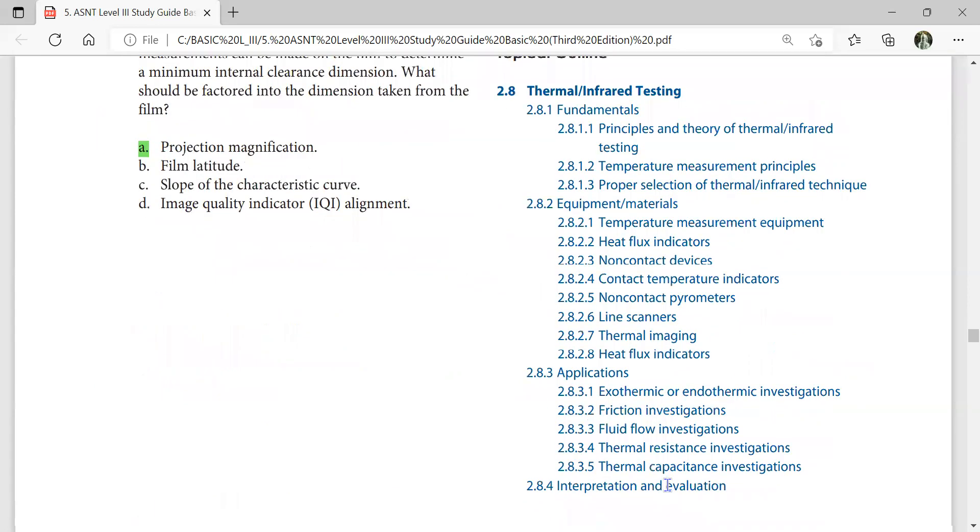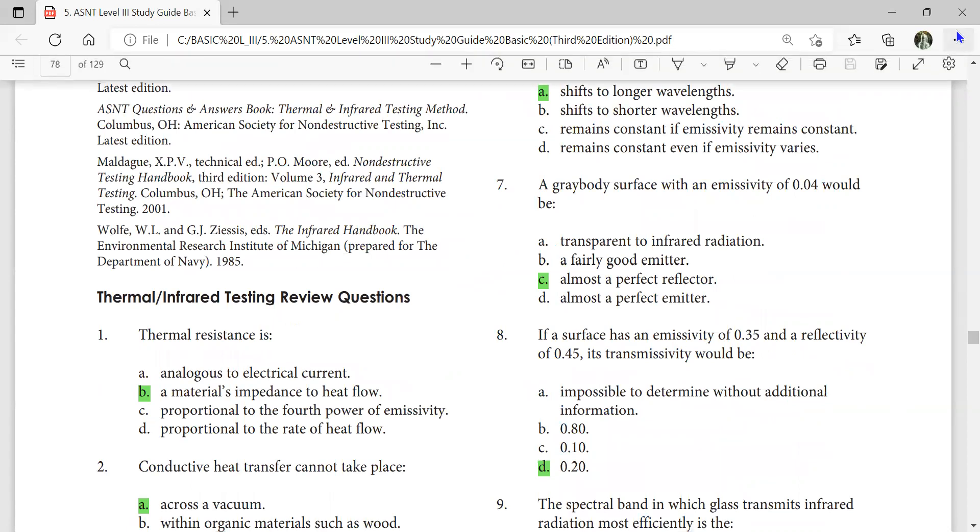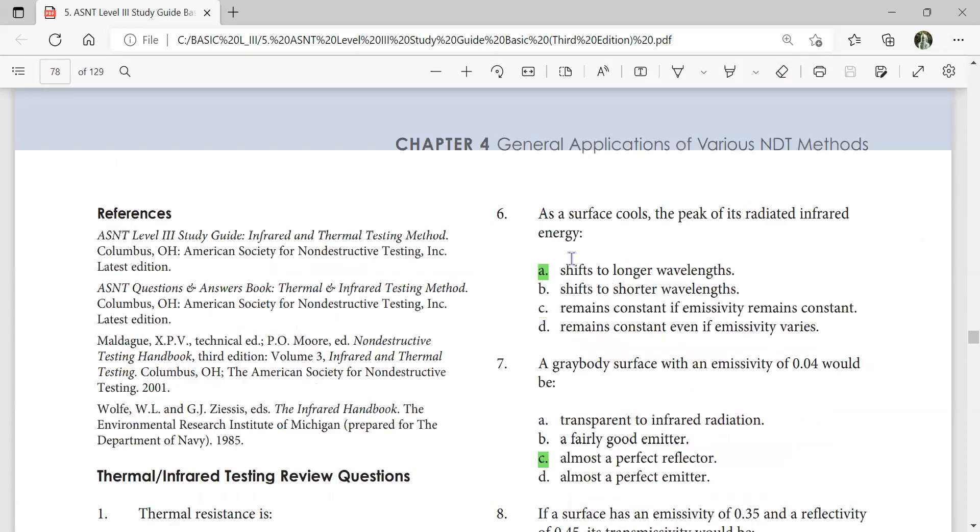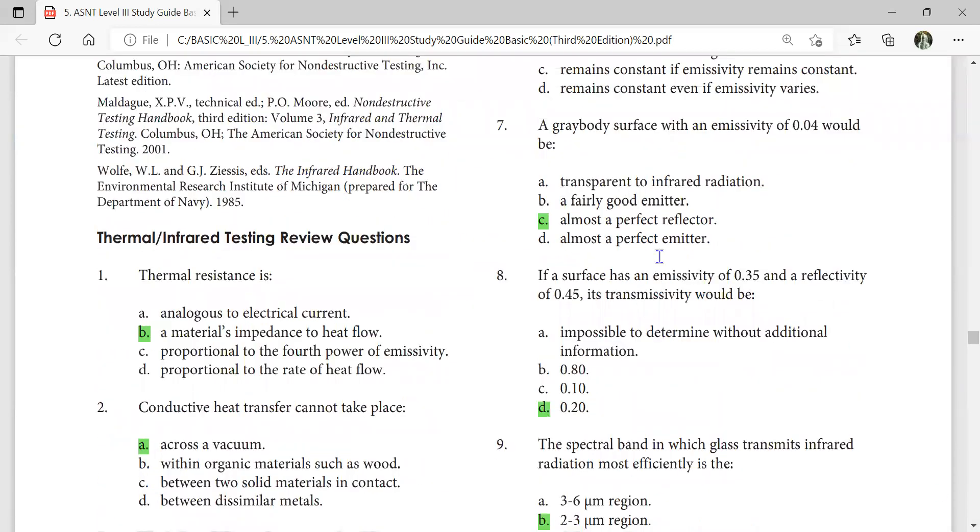Infrared testing. As the surface cools, the peak of the radiation infrared energy shifts to the longer wavelength. A gray body surface with an emissivity of 0.04 would be almost a perfect reflector. If a surface has an emissivity of 0.35 and reflectivity of 0.45, its transmissivity is... Emissivity, transmissivity, and reflectivity add up to 1, so just minus from 1, you will get 0.2.